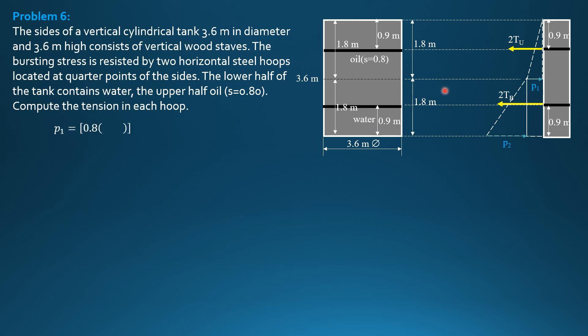P1 equals 0.8 times 9.81 times 1.8, so the pressure P1 is 14.13 kilopascals. While P2 is beginning here, because the pressure at the bottom should be P1 plus P2 total, but we'll just compute for this intensity P2. So P2 is 9.81 times 1.8, and it is equal to 17.66 kilopascals.